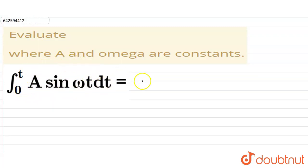Now here, A is the constant, so it will come out of the integration. So the equation will become A ∫₀ᵗ sin ωt dt.